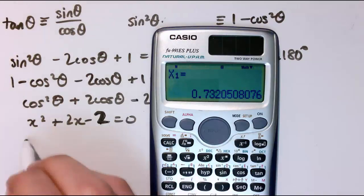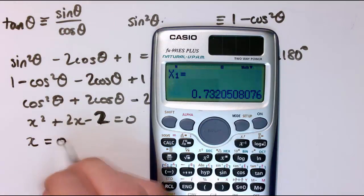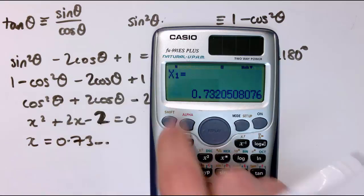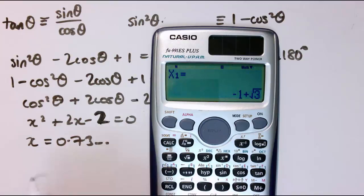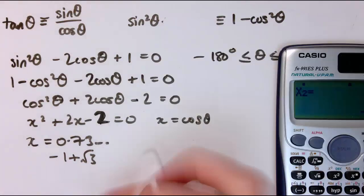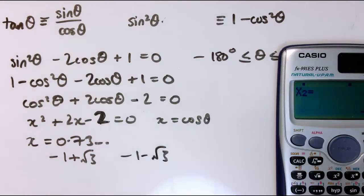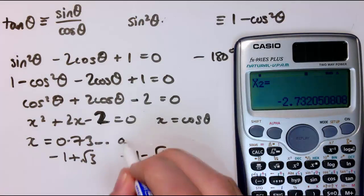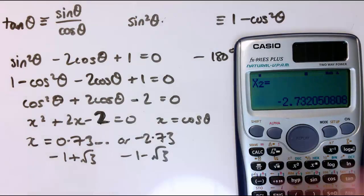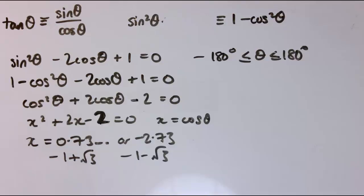So I've got two answers here. x equals 0.73. Let's also write that it's minus 1 plus the square root of 3, and the other one is minus 1 minus the square root of 3, which is minus 2.73. So they're the values of x that work for this.